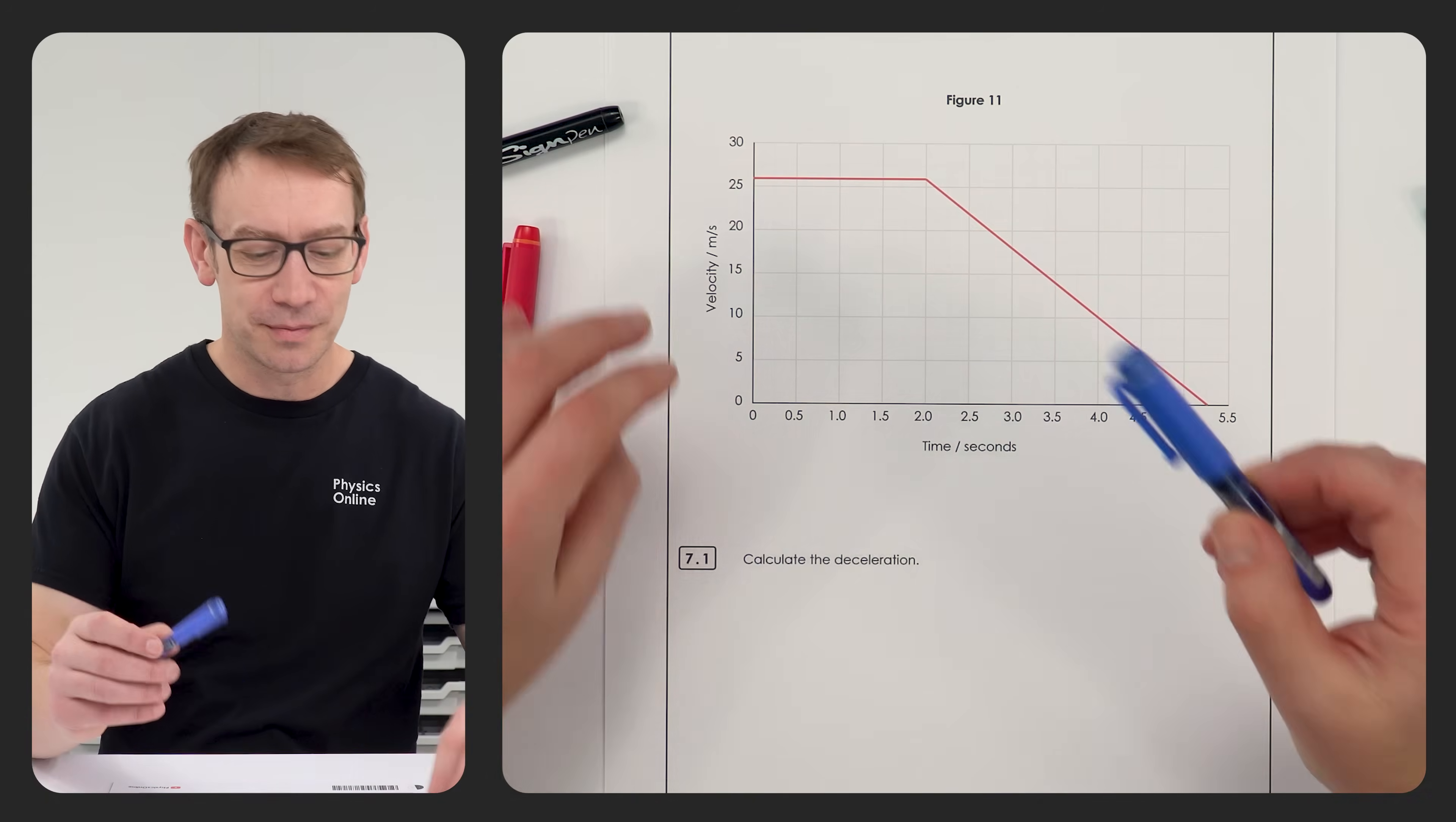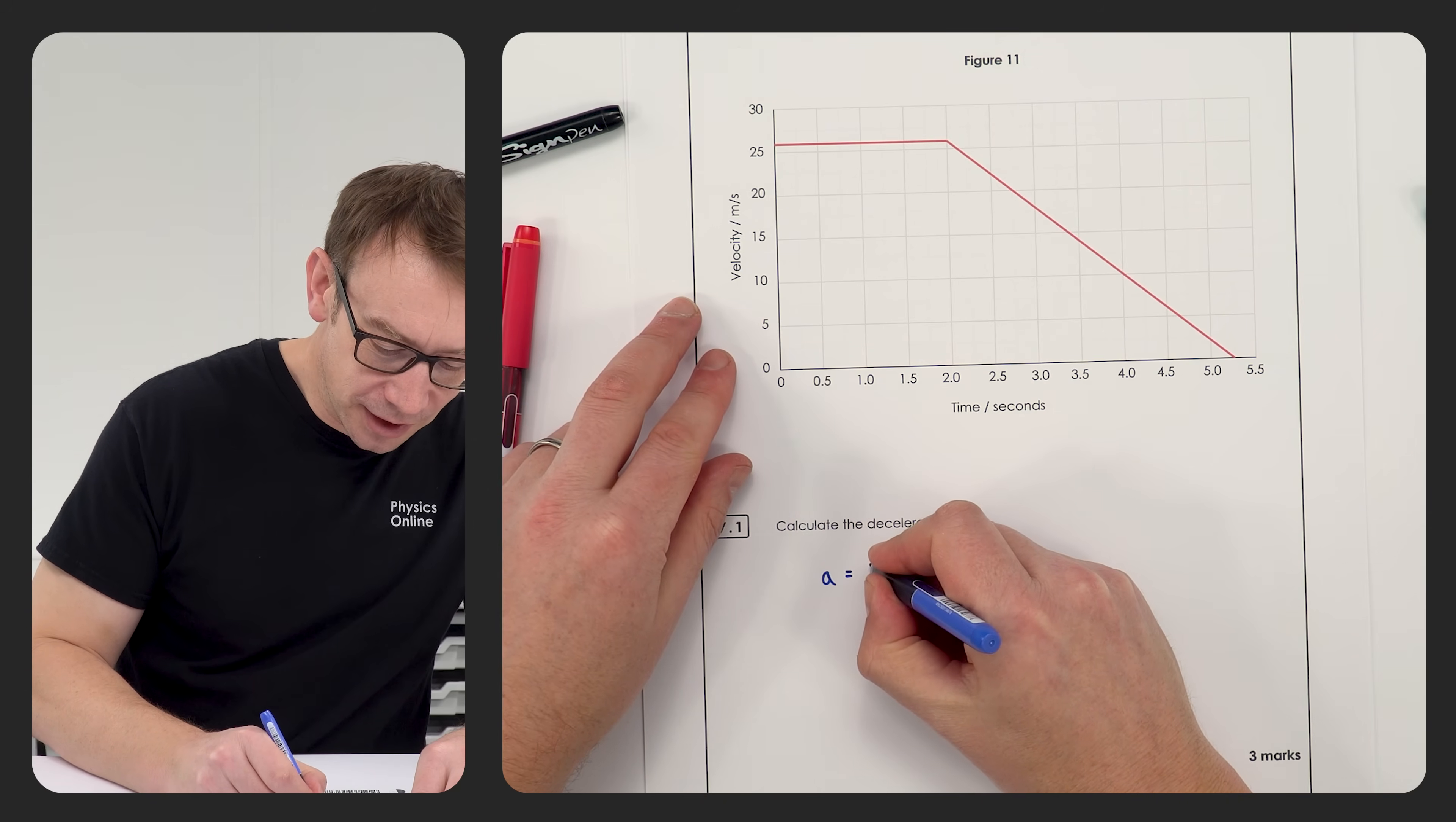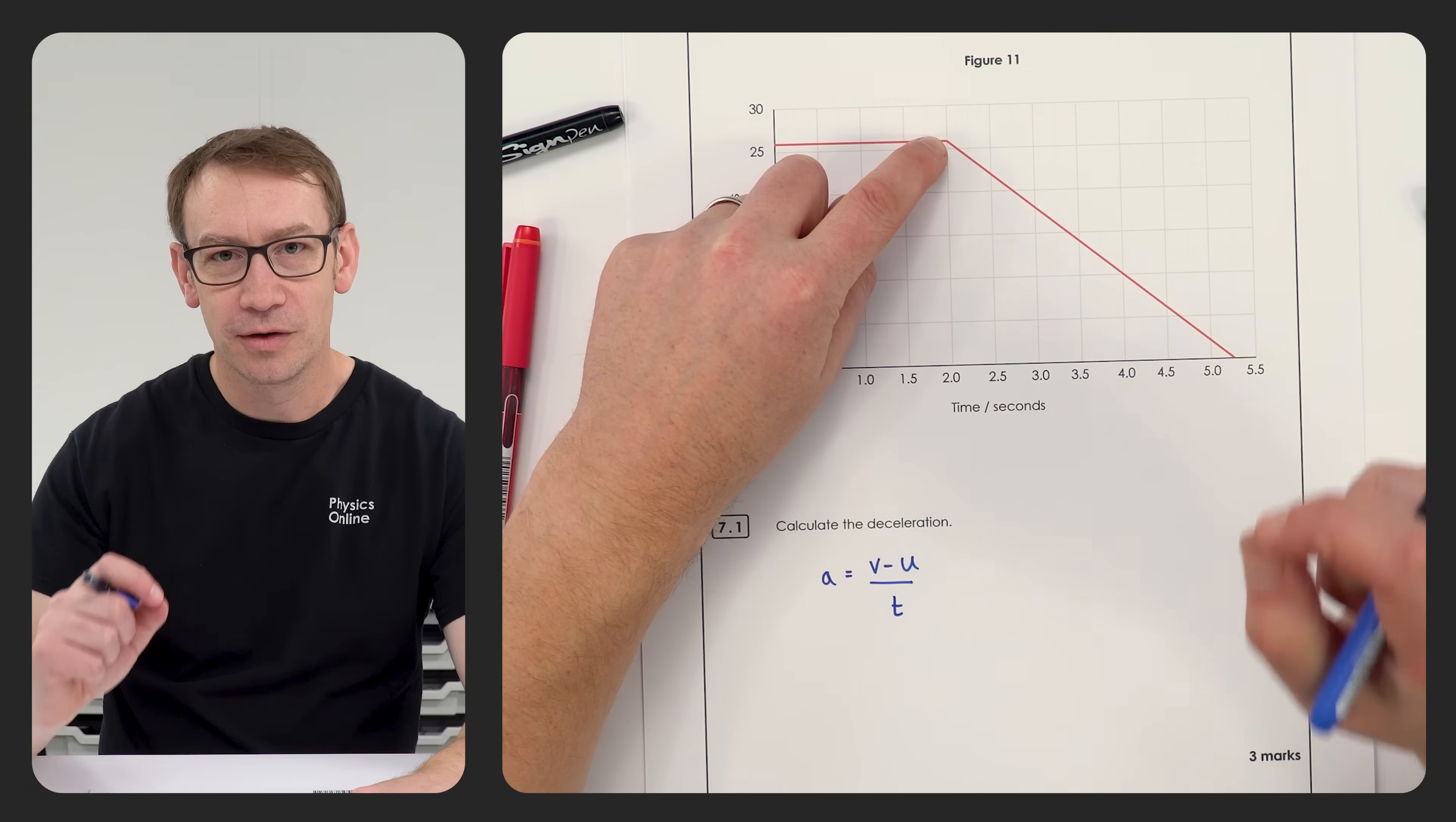Now we can do that because on the velocity time graph the gradient is equal to the acceleration, or we could also use the equation that says the acceleration is equal to the change in velocity divided by time. And we can see once they put the brakes on at this point here at two seconds, we've got a constant gradient so a constant deceleration.